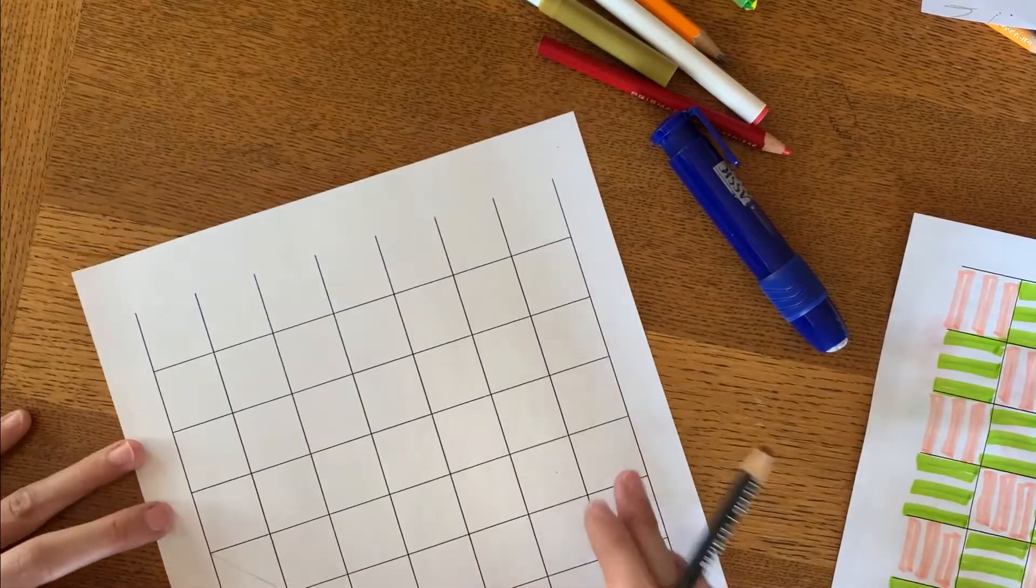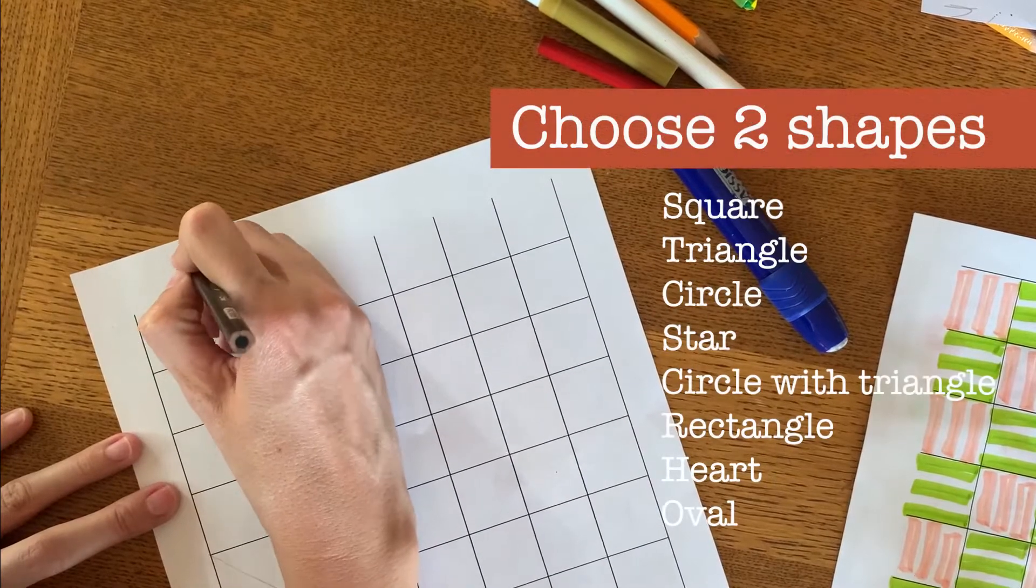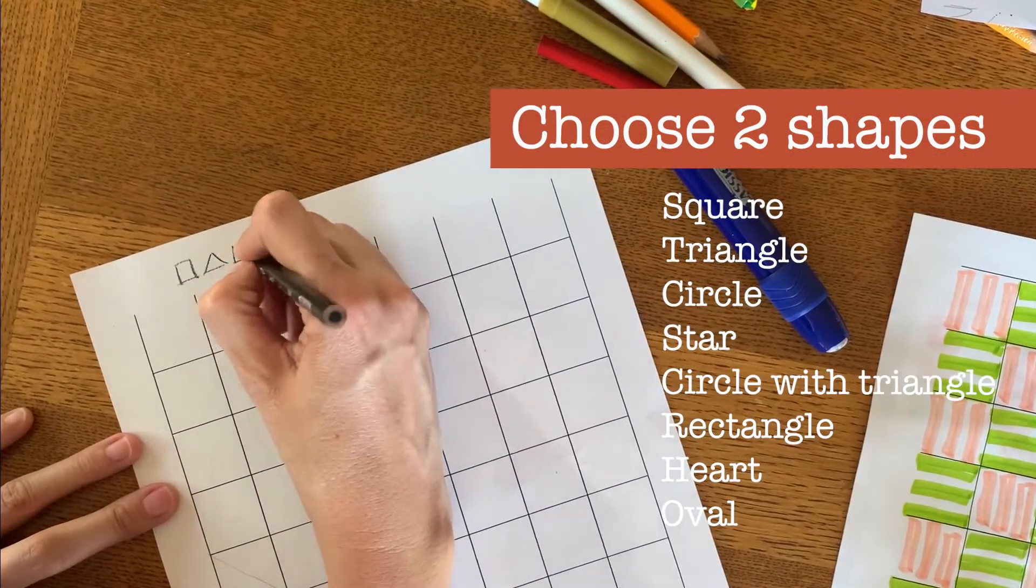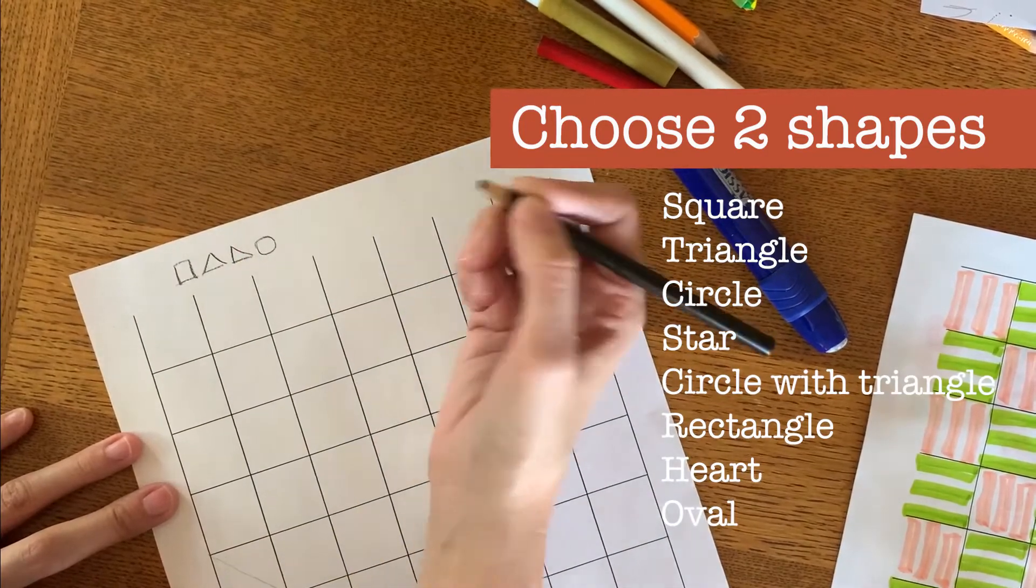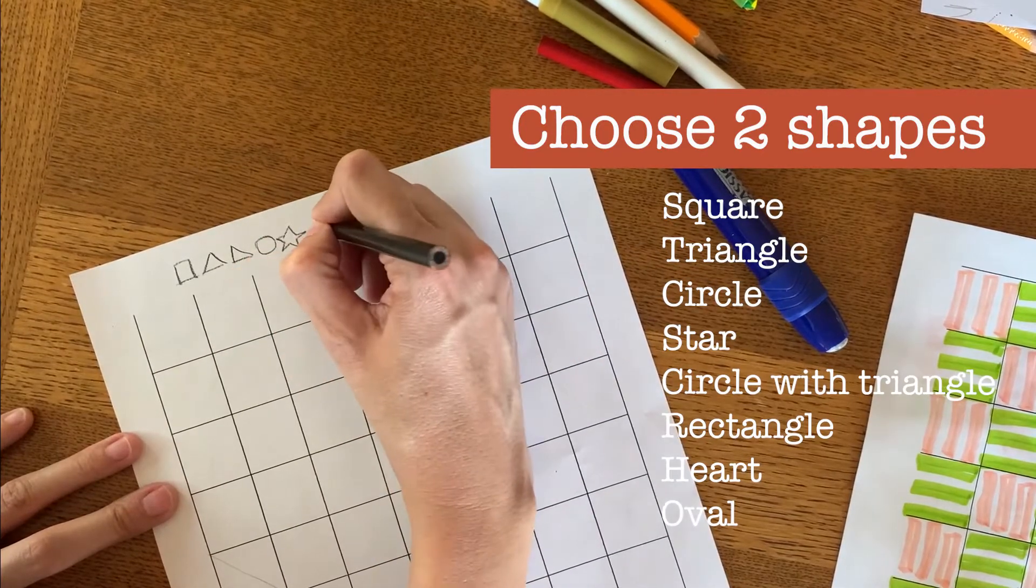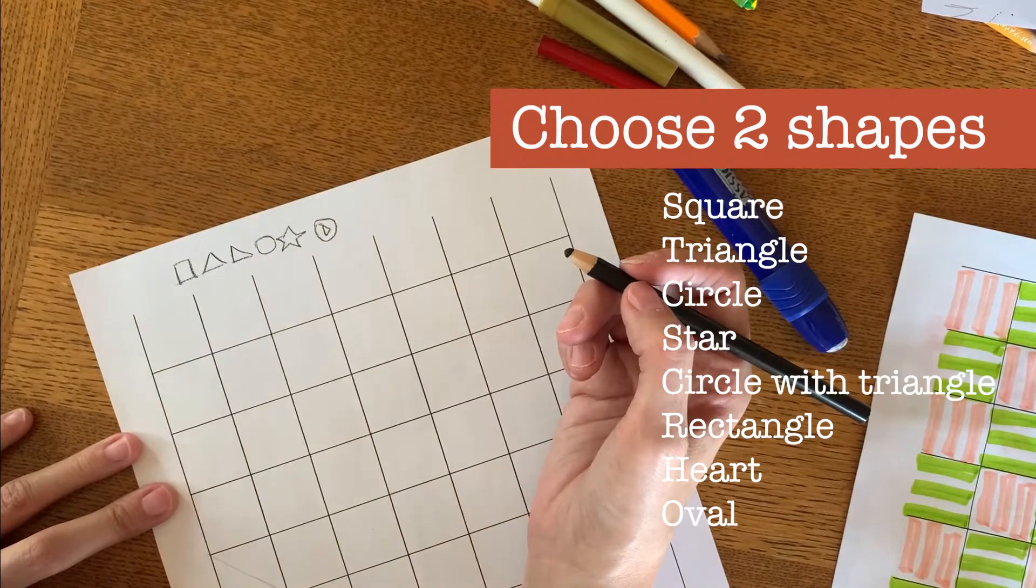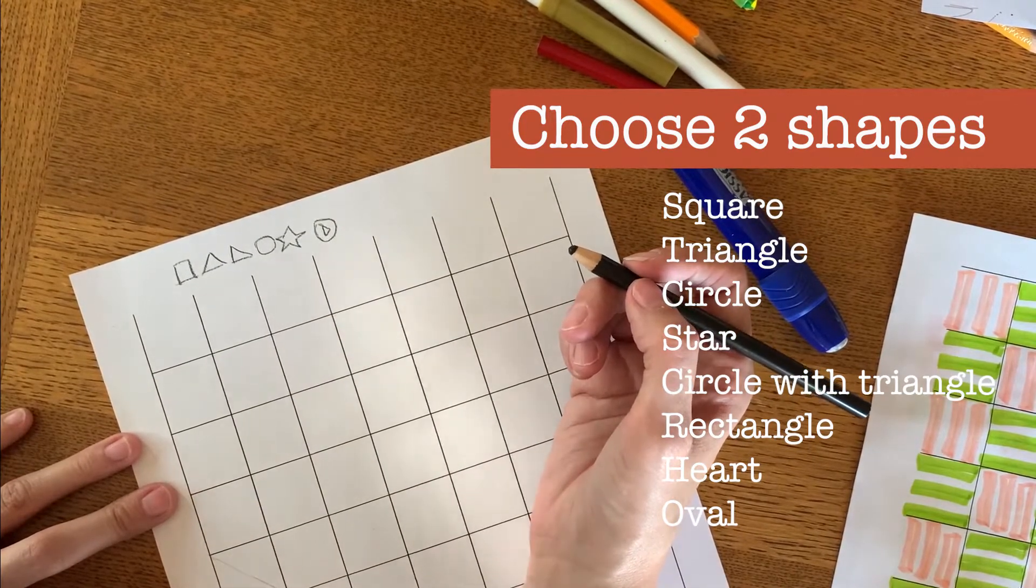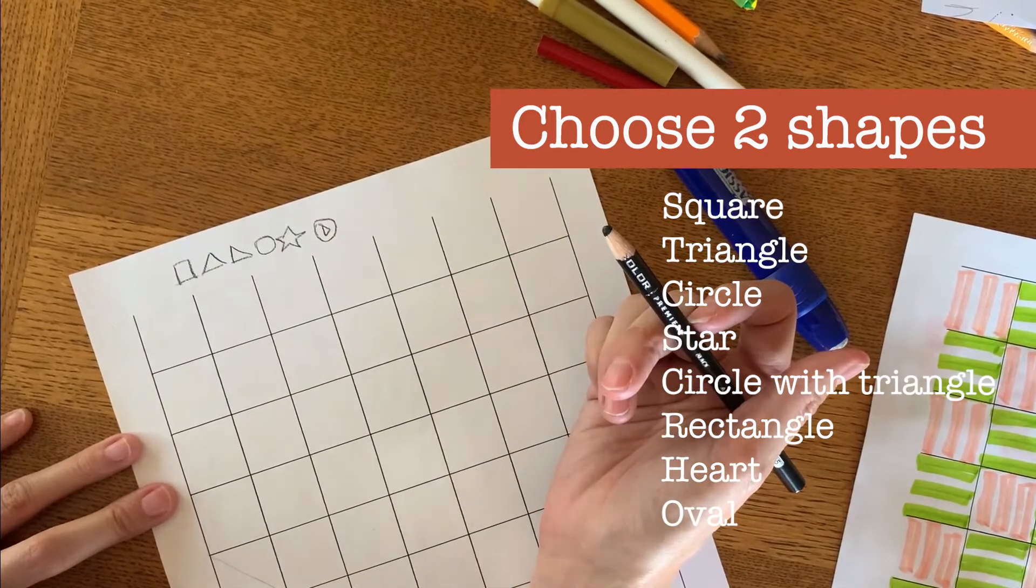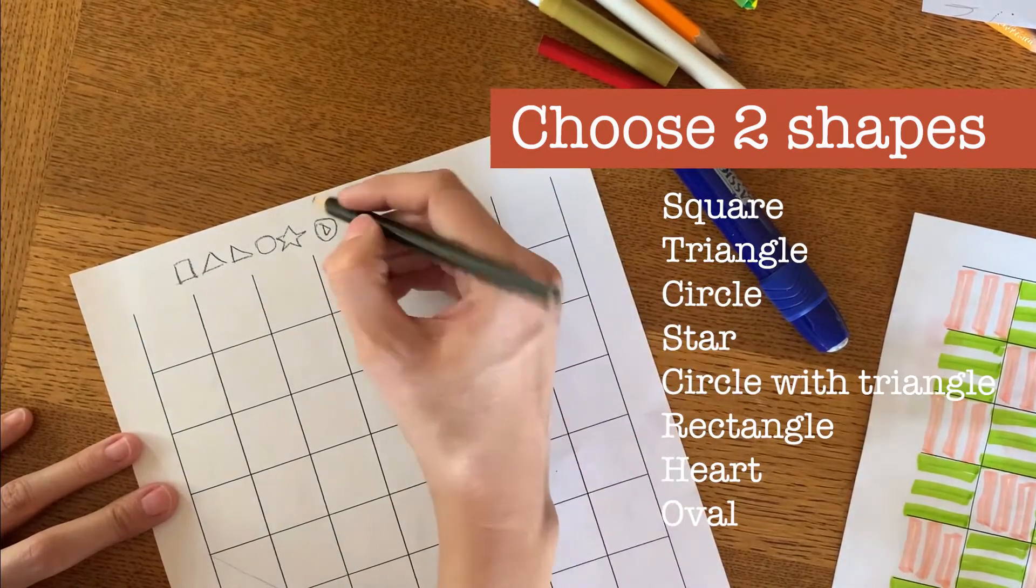Alright, so just pick, again, we're just picking two shapes. You can choose a square, a triangle, you can do a triangle laying on its side, you could do a circle, you could do a star, you could do a circle with a triangle inside of it like the YouTube logo. Be careful because the YouTube logo is copyrighted.